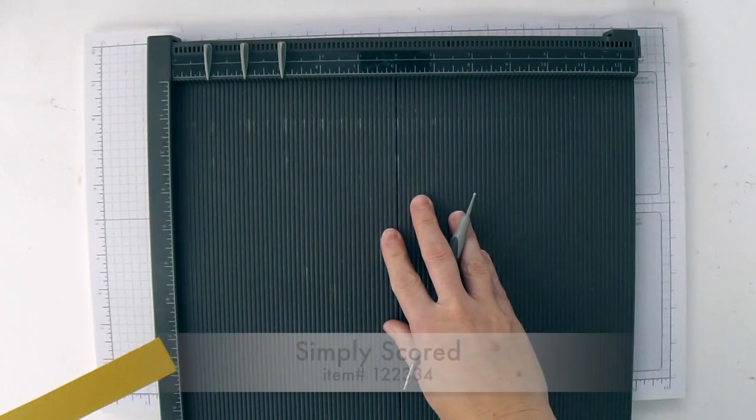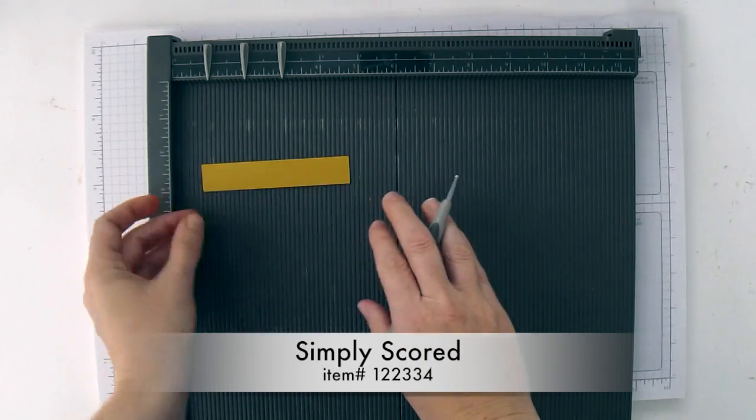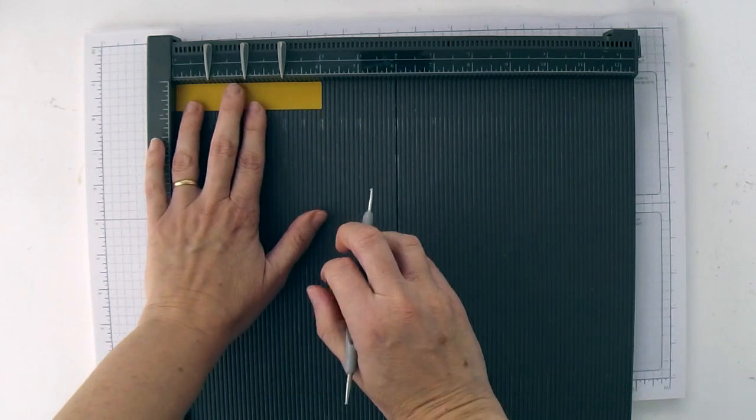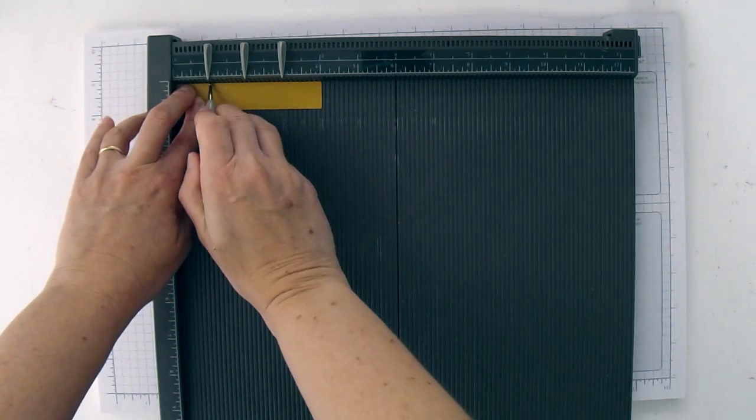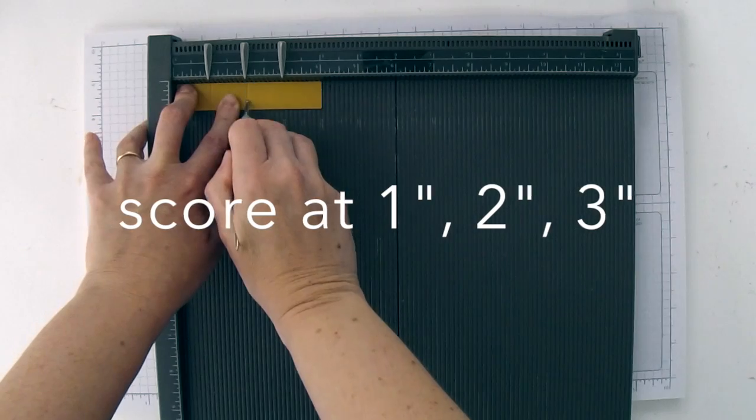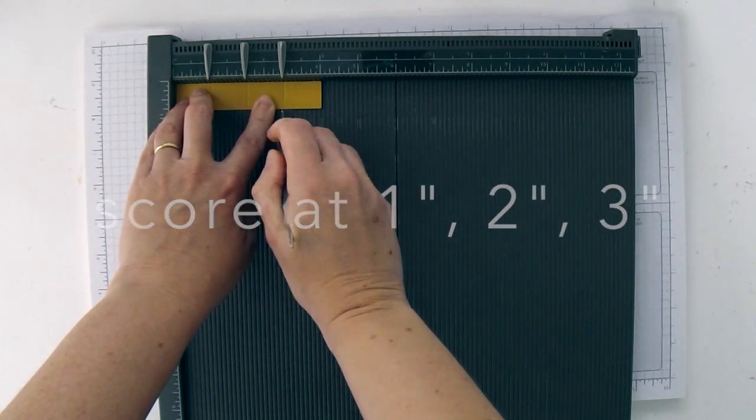I have my Simply Scored scoring tool here. We are just going to put the long side up at the top and score at the 1 inch mark, the 2 inch mark, and the 3 inch mark.